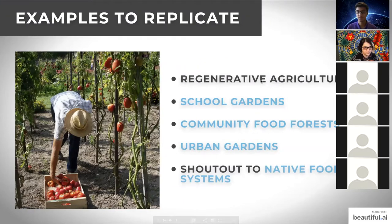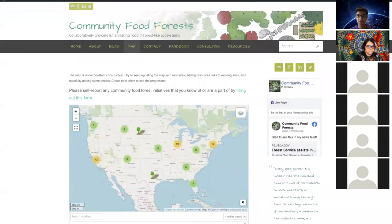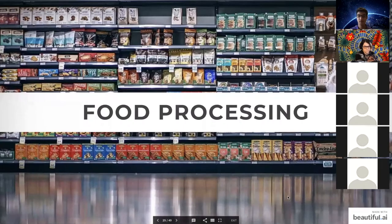Regenerative agriculture systems focus on soil health rather than just yield efficiency, aiming to grow food with minimal pesticides and fertilizers. Native food systems are also interesting — nations like the Navajo Nation and Wakama Nation in New Mexico are working toward food sovereignty, creating food ecosystems for their communities to remain independent from imports and external food dependencies.